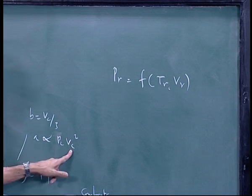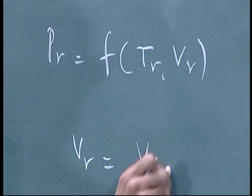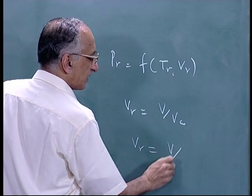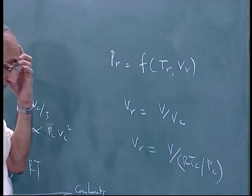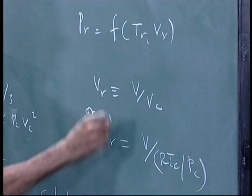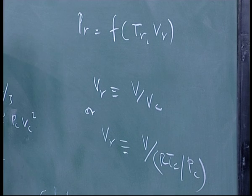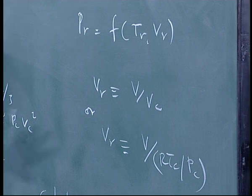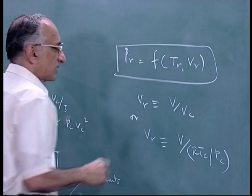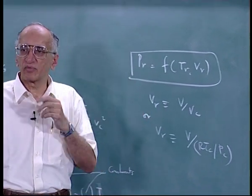The point about the Van der Waals corresponding states principle is that p_r is equal to some function of t_r and v_r. In general, note that v_c is very difficult to measure, so v_r is often defined as v divided by v_c, but v_r can also be taken as v divided by R·T_c/p_c. In some correlations you non-dimensionalize the volume using T_c and p_c rather than using the critical volume directly.